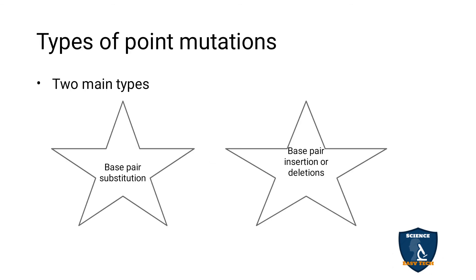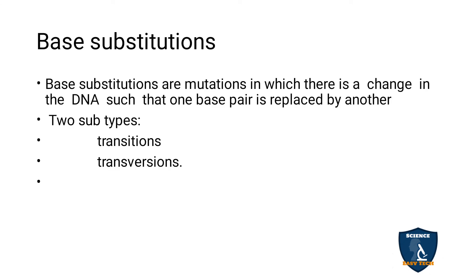Types of gene mutation: there are two main types — base pair substitution, and base pair insertion and deletion. Base substitution is the mutation in which one base pair in the DNA is replaced by another base pair — one nitrogen base is replaced by another nitrogen base. Two subtypes are transition and transversion.